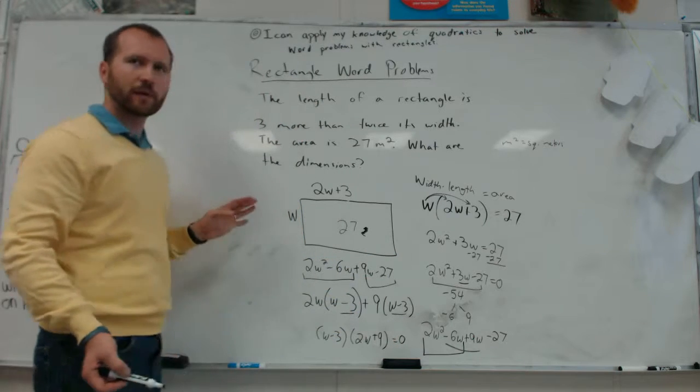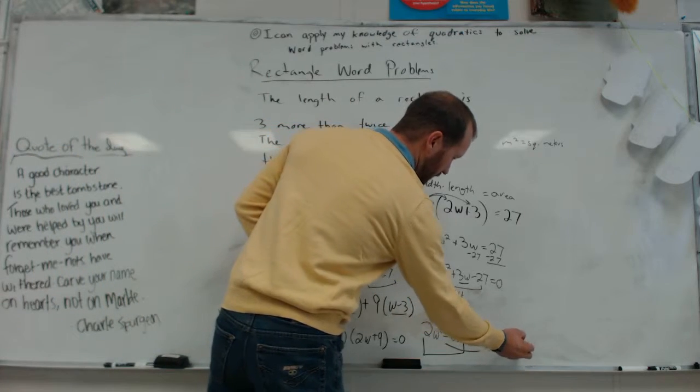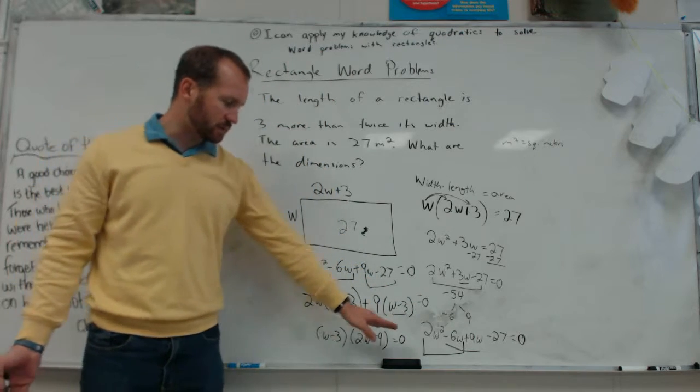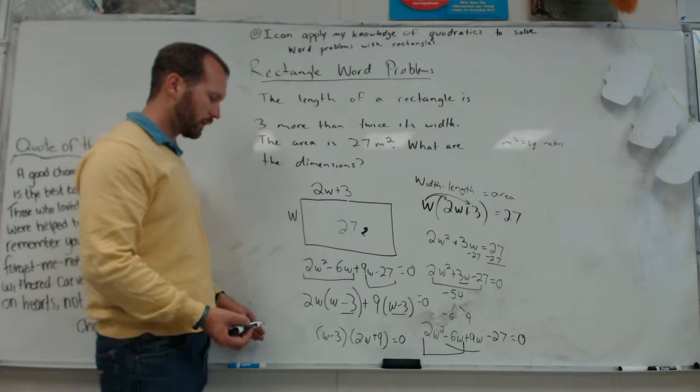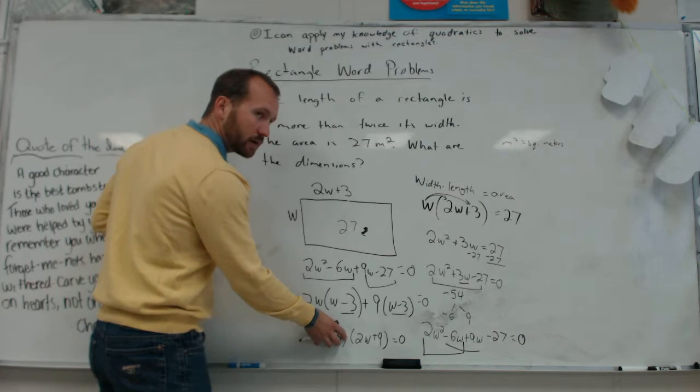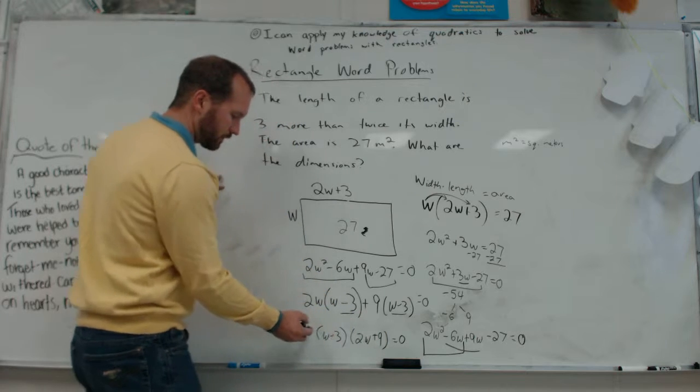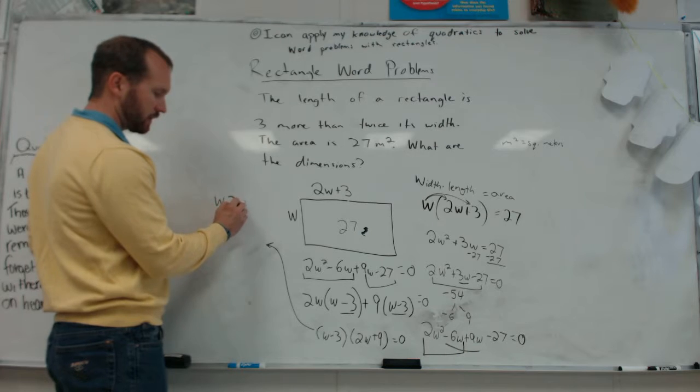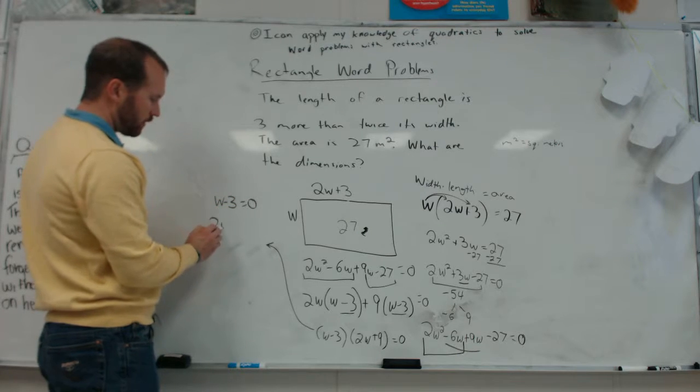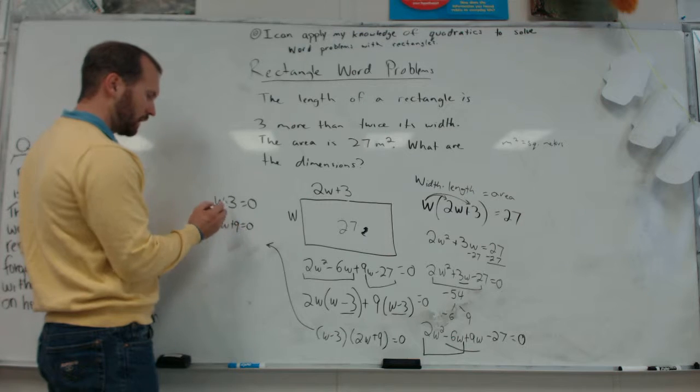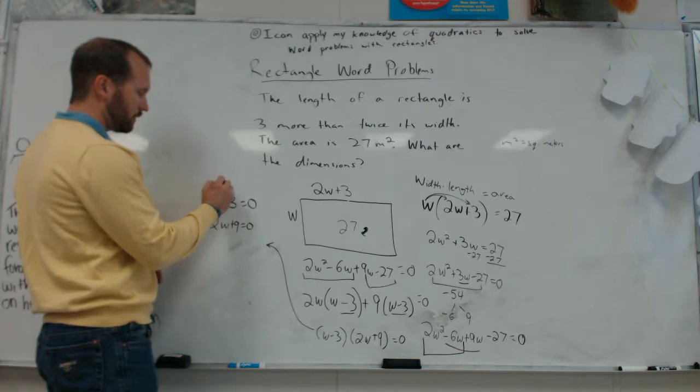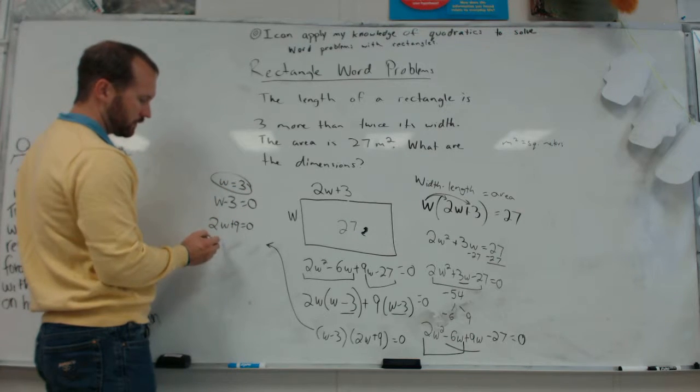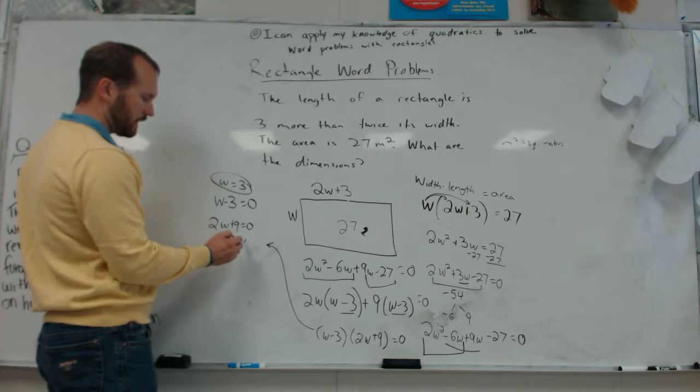This all equals zero. So this equals 0, this equals 0, this equals 0. So if this equals 0, that means that either this factor equals 0 or this factor equals 0. So either w minus 3 equals 0 or 2w plus 9 equals 0. If w minus 3 is 0, then w is 3. If 2w plus 9 is 0, then w is negative 9 halves.